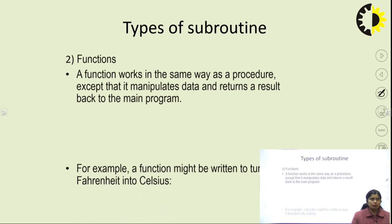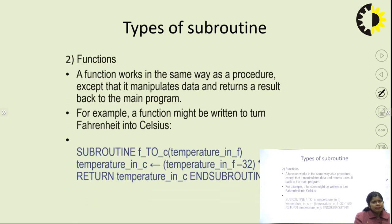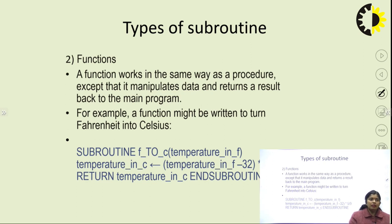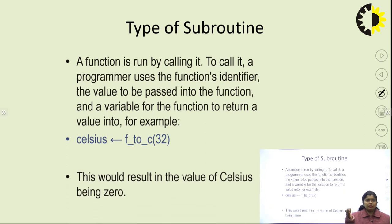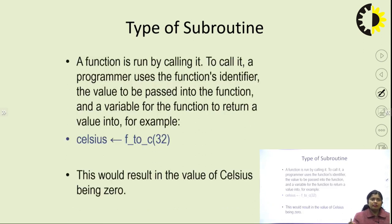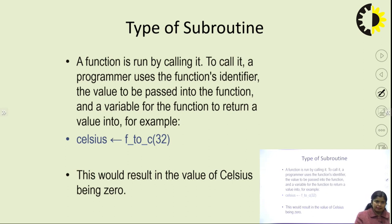A function subroutine manipulates some data and returns a result back to the main program. For example, a temperature conversion function converts Celsius to Fahrenheit or vice versa. In summary: a routine is a collection of micro instructions, and a subroutine is also a collection of micro instructions but performs a specific task — it can be a procedure or function — and is stored in the SBR register.